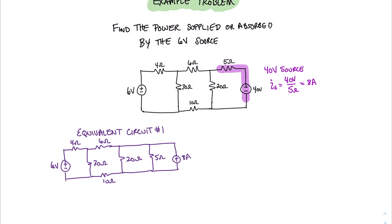Having done this source transformation, we can see that we now have two parallel resistances: the 20-ohm resistor and the 5-ohm resistor. The parallel combination of a 20-ohm and a 5-ohm resistor equals 20 times 5 divided by 20 plus 5, which equals 4 ohms.